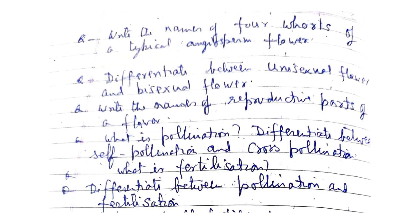Write the names of the four whorls of a typical angiosperm flower. Differentiate between unisexual flower and bisexual flower. Write the names of the reproductive parts of a flower. What is pollination? Differentiate between self-pollination and cross-pollination.